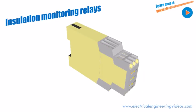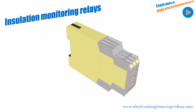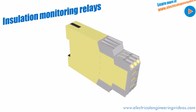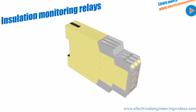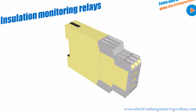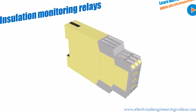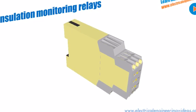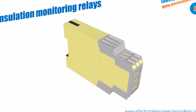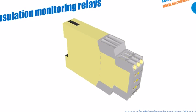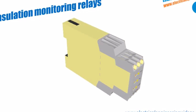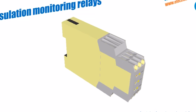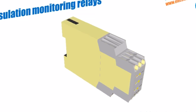The insulation monitoring relay detects insulation faults and trips the circuit if the value falls below a preset value. In such relays, a superimposed DC measuring signal is used for measurement. The insulation resistance is calculated from the superimposed DC voltage and the resultant current.